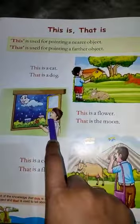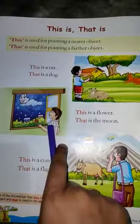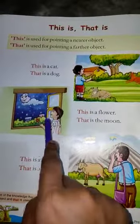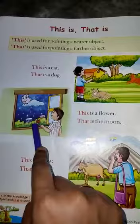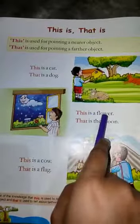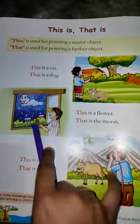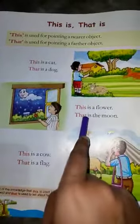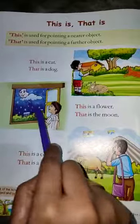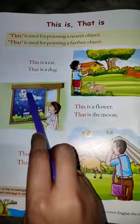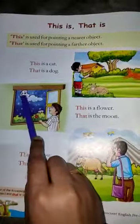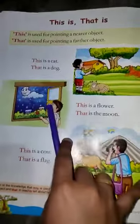Like this picture. This is a flower. Flower boy ke saamne hai, this is a flower. That is the moon. Moon door hai, so that is the moon.